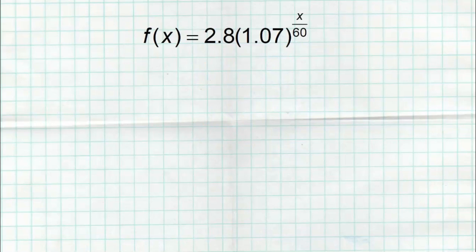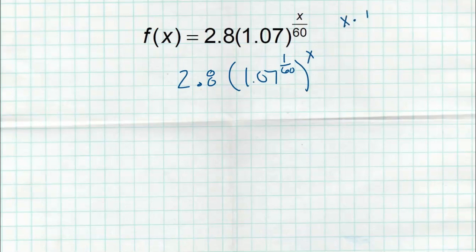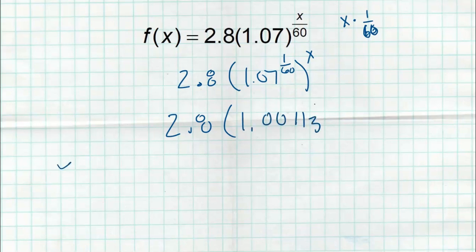Here's another one — slightly trickier with decimals. I have 2.8 times 1.07 to the x divided by 60. Division is multiplication of the reciprocal, so this is 1.07 to the 1/60th, all raised to the x — I'm separating that 1/60 and the x as a double power. I have no idea what 1.07 raised to the 1/60th is, so I go to my calculator. Take your time typing it in correctly. 1.07 raised to the 1/60th is 1.00113. That is my b value. So my a is 2.8, my b is 1.00113, and there's my single x — in that exponential form.